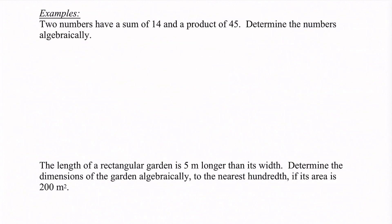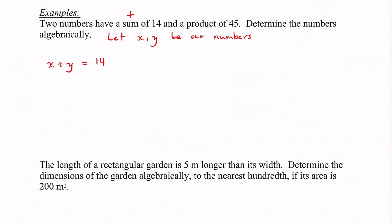In the first example, it says two numbers have a sum of 14 and a product of 45. Determine the numbers algebraically — so I'm going to have to do this by hand. Let x and y be our numbers. If they have a sum of 14, that tells me x plus y equals 14. And if the product is 45, product means multiply, so x times y equals 45. So out of this I get two equations.